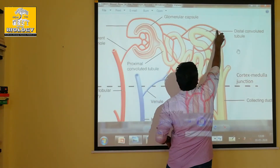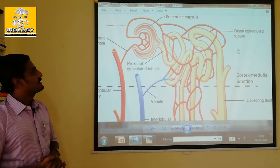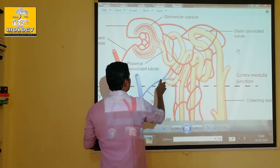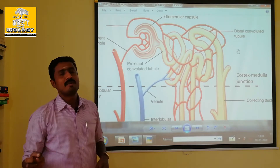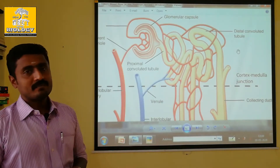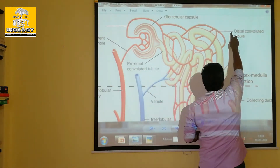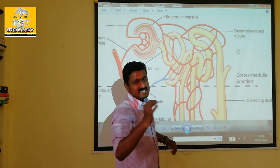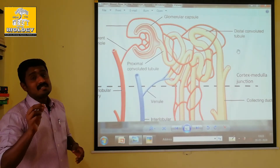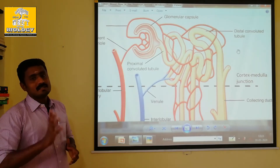This is the blood vessel. This is ADH acting on the endocrine glands. The distal convoluted tubule — that is the DCT. So this is where the endocrine glands interact.